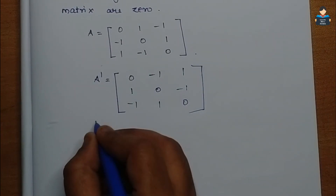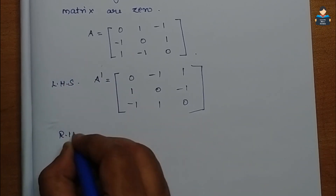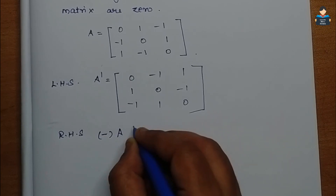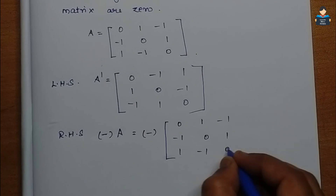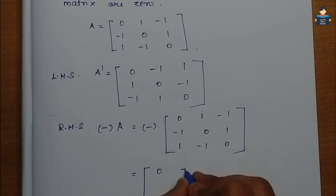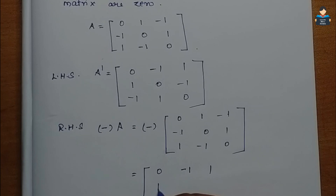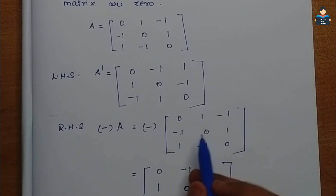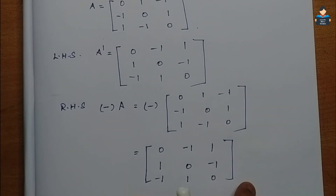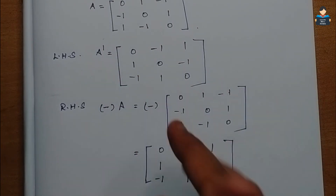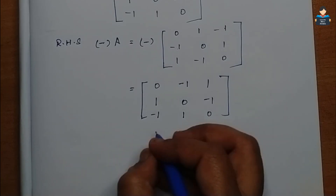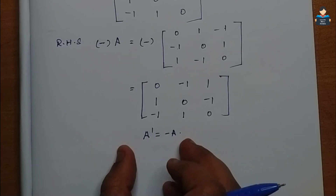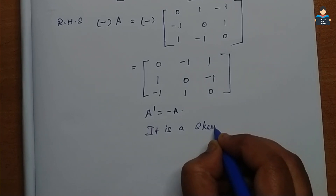Now check -A. Minus of matrix A = -[0,1,-1; -1,0,1; 1,-1,0] = [0,-1,1; 1,0,-1; -1,1,0]. Comparing with A', we see A' = [0,-1,1; 1,0,-1; -1,1,0], which equals -A. The condition A' = -A is satisfied, so this is a skew-symmetric matrix.